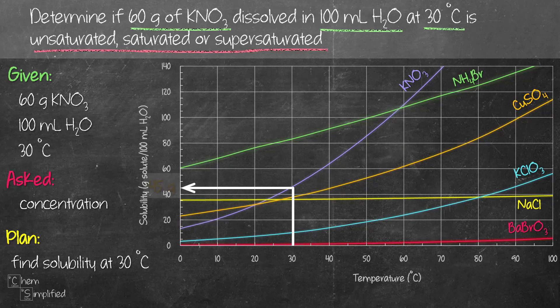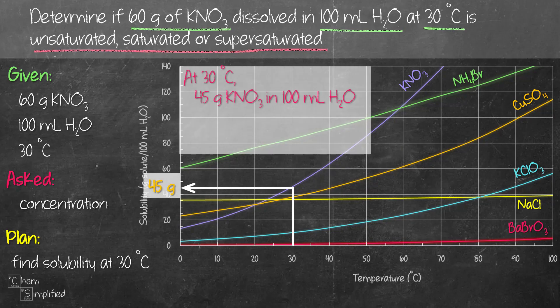So that will give us 45 grams. Now at 30 degrees, 45 grams of KNO3 can be dissolved in 100 ml of water. However, our question is giving us 60 grams. 60 grams is located above the solubility curve, which means 60 grams is more than 45 grams.